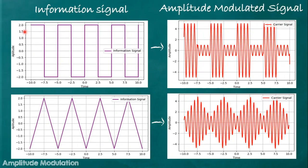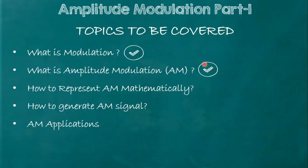If the shape of the information signal is a square wave, you can see that the shape of the envelope is also a square wave — or you can say that the amplitude of the carrier signal varies according to that shape. So the information is embedded in the amplitude of the carrier signal.